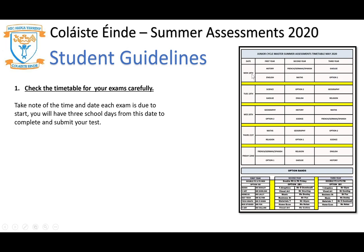For example, on Monday the 18th, first years have history. They will have three full days within which to submit that assessment, and then it will be taken down from the online format on Thursday the 21st of May.